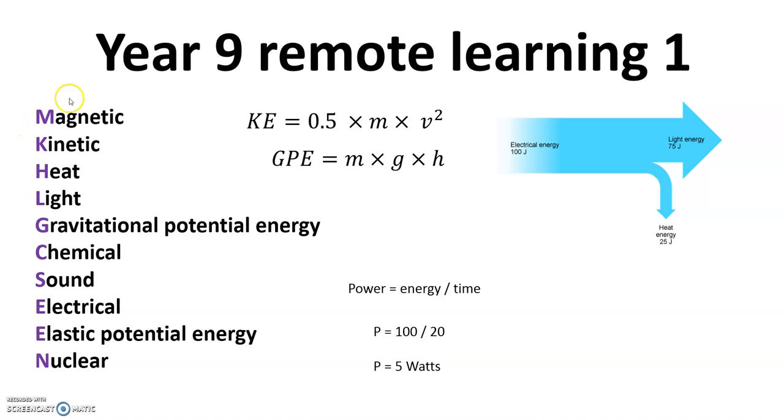Here are the types of energy. So we've got magnetic, kinetic, heat, light, gravitational potential energy, chemical,